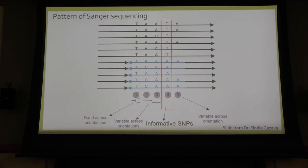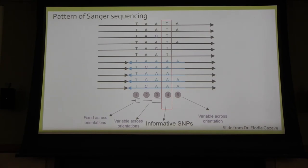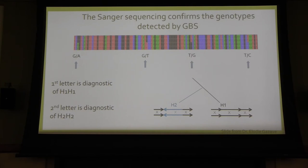For Sanger sequencing, we looked at patterns: pattern one shows fixed alleles across orientations, which does not give informative or unique information. Patterns two, three, and five are alleles that are variable across orientations, where inversions can be seen. However, pattern four shows SNPs that are different in two orientations but fixed, which could be informative. The result from one dataset showed the first letter is diagnostic of the ancestral lineage — G and T respectively — and the second letter is diagnostic of the derived lineage — A, T, G, and C.